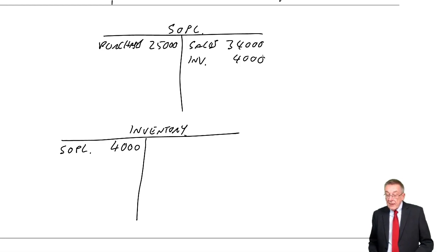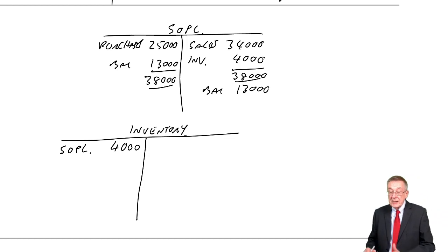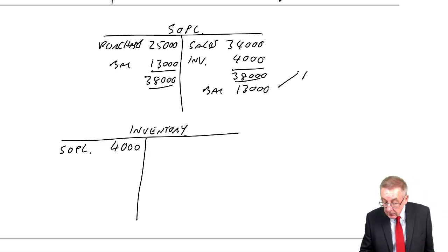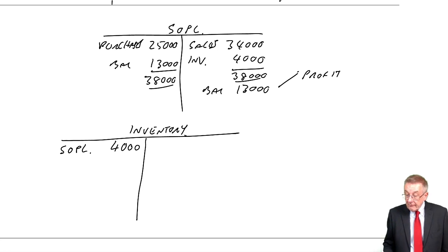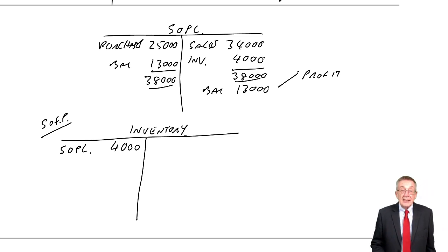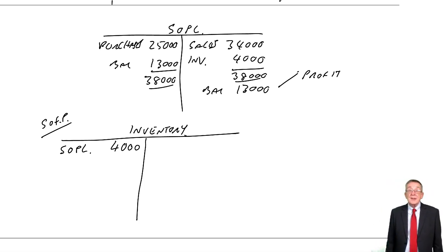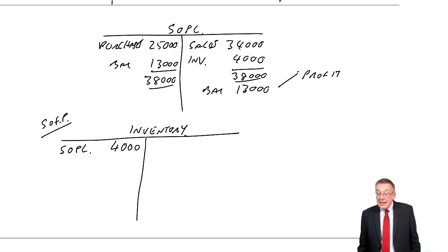Things now work beautifully. The balance left on the statement of profit or loss is, of course, the correct profit — 13,000. Inventory, with a debit balance as an asset, we'll list it as a current asset in the statement of financial position, and as always, we'll leave the balance there. So it's that one entry at the end of the year that makes everything work. However, for completeness, one last example — example three.